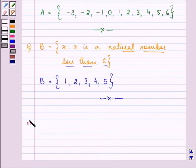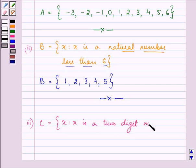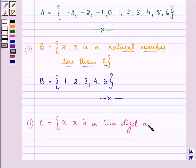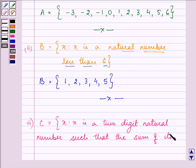Moving on to the third part. Now this was the second part. And here we are given x is to x is a two-digit number, two-digit natural number.